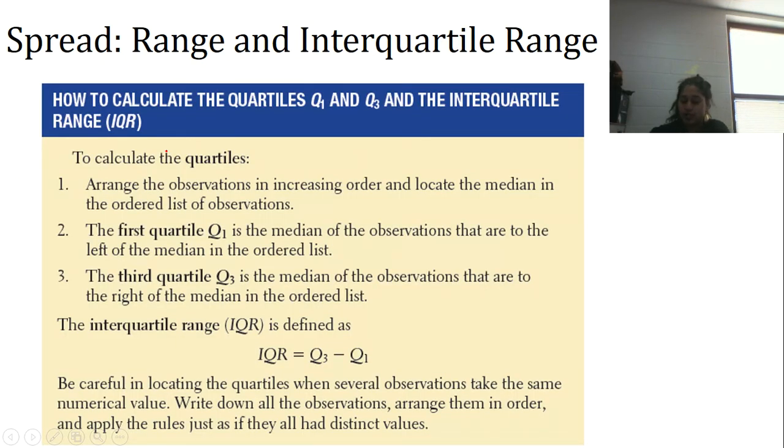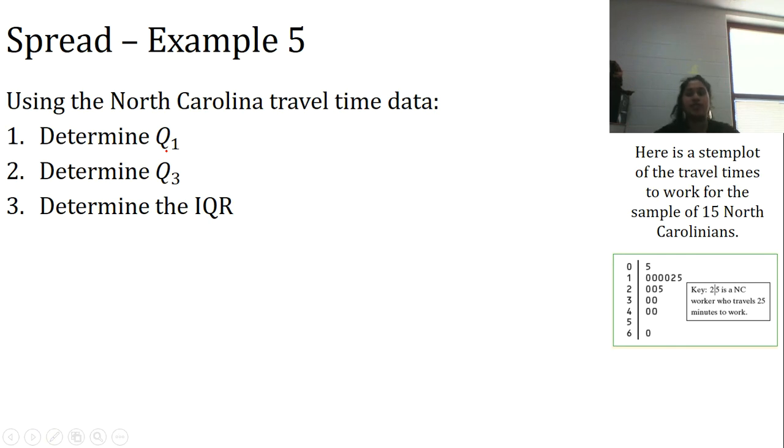Spread and interquartile range. Here's some information, a formula you might need, but let's just dive on into it. We've got this North Carolina travel data. Again, we're going to determine our Q1, our Q3, and then the interquartile range, which is going to help us understand the concept of an outlier in just a little bit. So the best thing to do here is let's just put it out in numeric order and in ascending order.